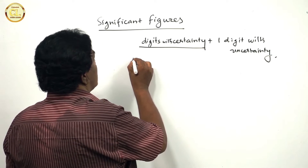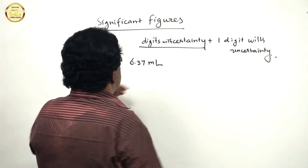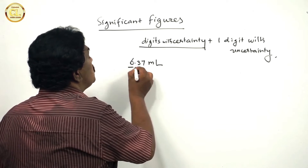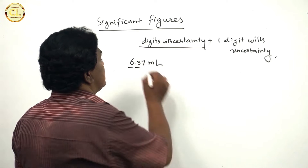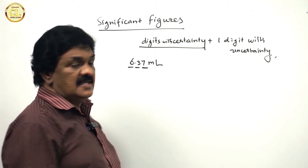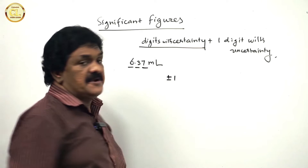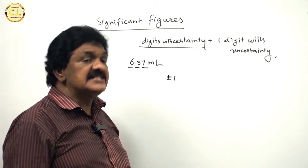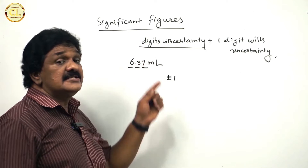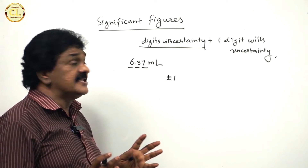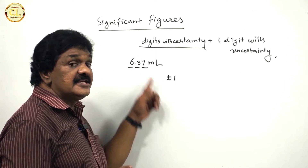For example, 6.37 milliliter. These two digits are certain, but this digit is uncertain. Its uncertainty is plus or minus 1. So, significant figures are the digits in a number with certainty, plus one digit with uncertainty.